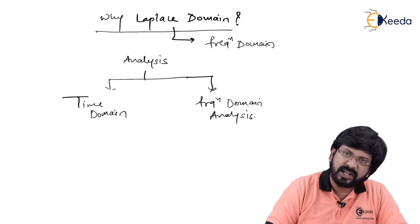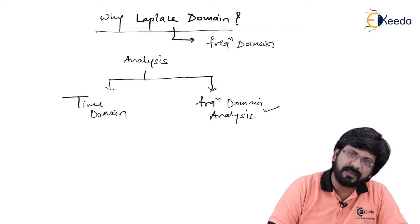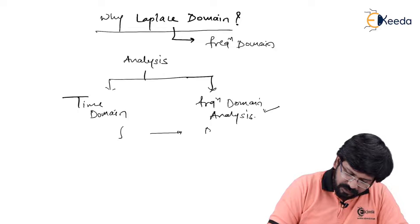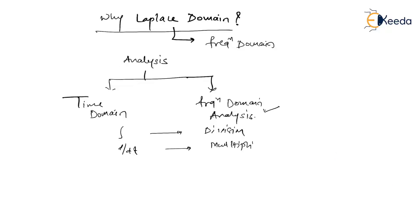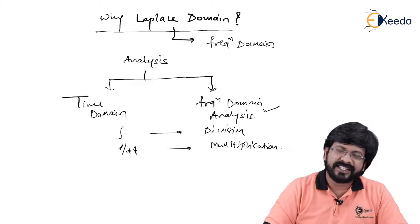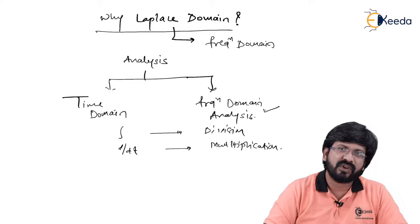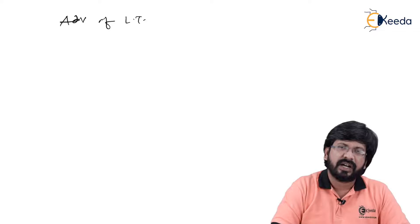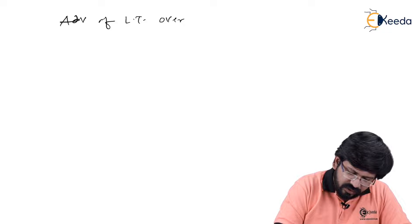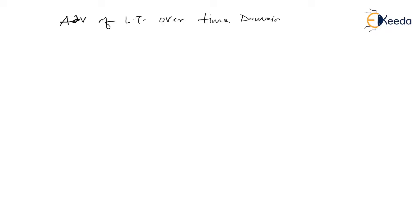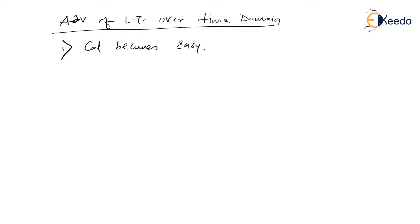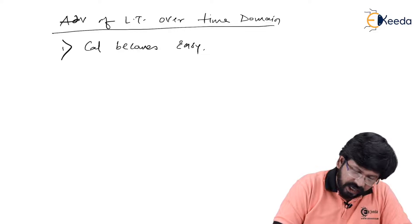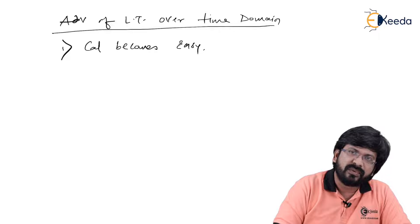Comparing time domain and frequency domain analysis, frequency domain analysis becomes the easier approach because your integration becomes simple division and your derivative becomes simple multiplication. There are also special signals for which we cannot use a time domain approach, which is why we go for the frequency domain — that is, the Laplace domain approach. The first advantage of Laplace transformation over time domain is that the calculation becomes easy.